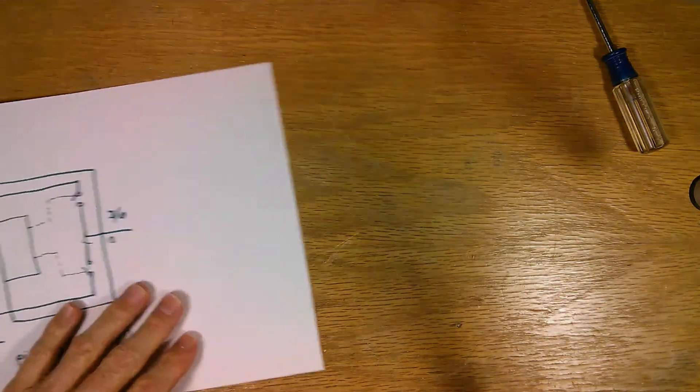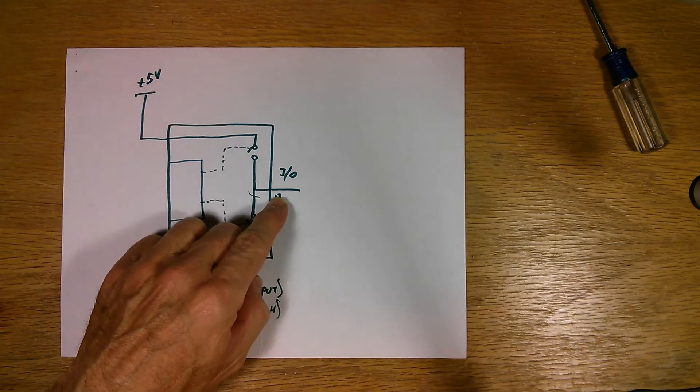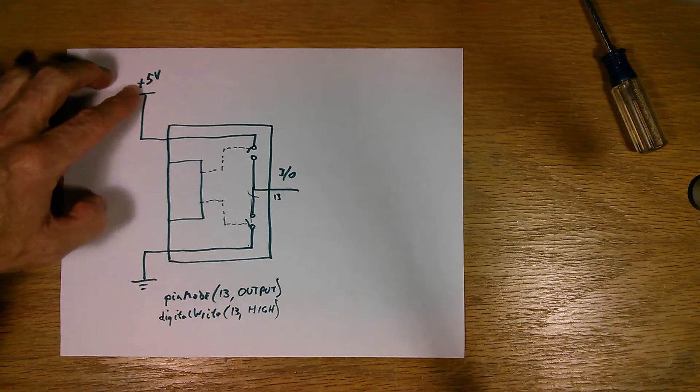If we look inside a microcontroller, I'll just put in a very simple one here that has only one I/O pin. Here's the power and the ground pins, 5 volts and ground.